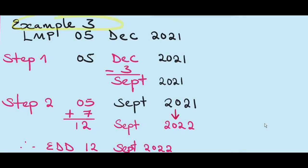This is the last example of method 1 of Naegele's rule. Our LMP is 5th December 2021. Step 1: subtract 3 from the month, which gives us September. Step 2: add 7 to the day, which gives us 12th September. Here I've added 1 to the year because the LMP is in December 2021 and the pregnancy will tip into the next year — so our EDD is 12th September 2022. It's not automatic that you add 1 to the year for every LMP; you have to see the exercise in front of you.